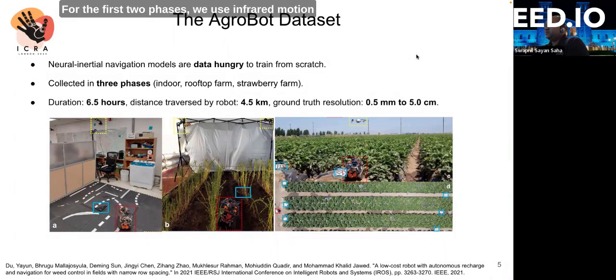For the first two phases, we use an infrared motion capture system, which is shown in yellow, to track the robot, which is shown in red. We use infrared markers to denote the reference body, which is shown in blue.